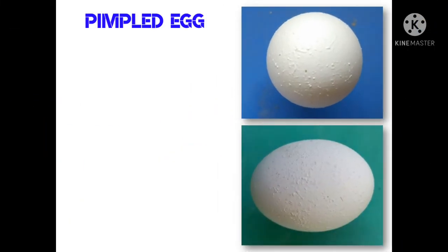This is a pimpled egg defect. These pimples are small lumps of calcified material on the eggshell. Some pimples can be broken off easily without damage to the shell, while others may leave a small hole in the shell. The incidence of the formation of pimpled egg is near about 1% of total egg production.